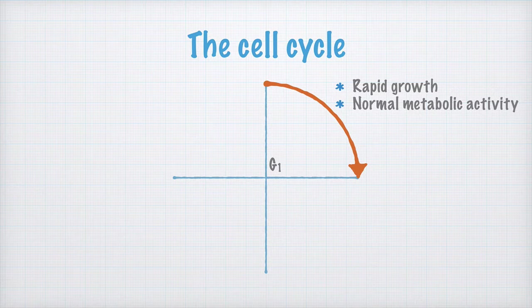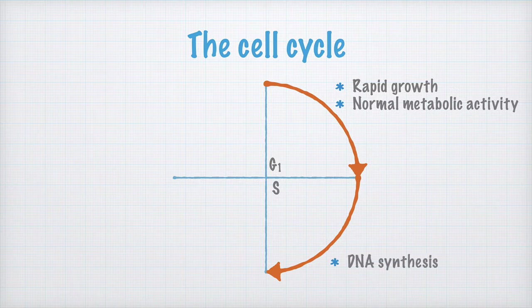Sometimes, this is written as an extra loop here, and called the G0 phase, if the cell is no longer dividing. Anyway, after the G1 phase, the cell enters the S phase. S here stands for synthesis of DNA.